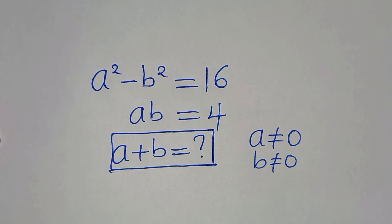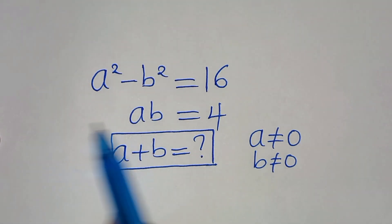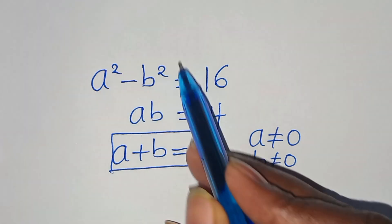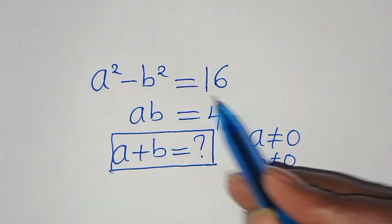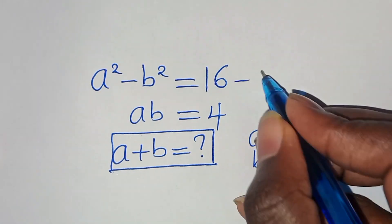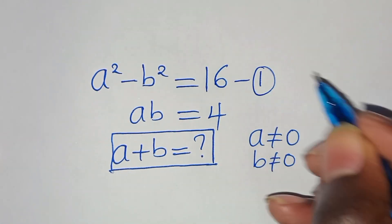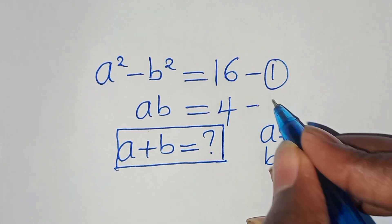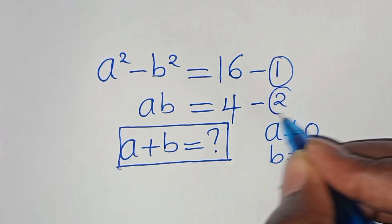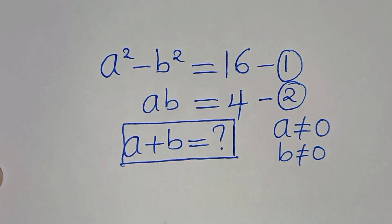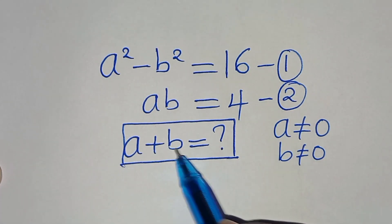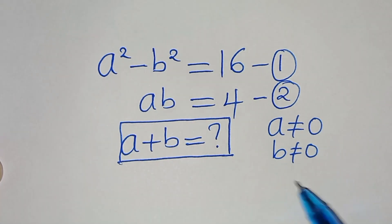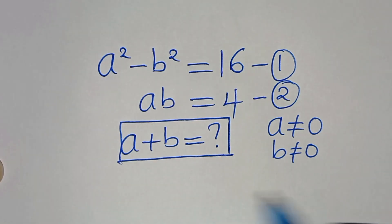Hello everyone, you're welcome to solve this nice algebra problem: a squared minus b squared equals 16. Let's call this equation 1. And a times b equals 4, let's call this equation 2. Now, what is the value of a plus b, given that a is not equal to 0 and b is not equal to 0?